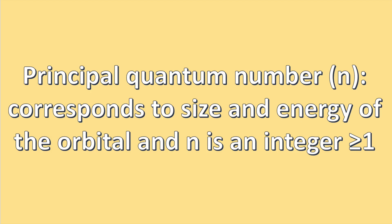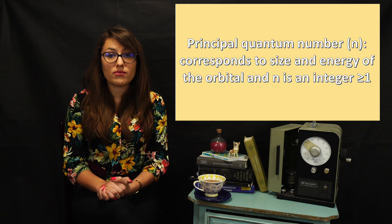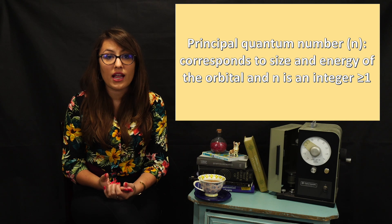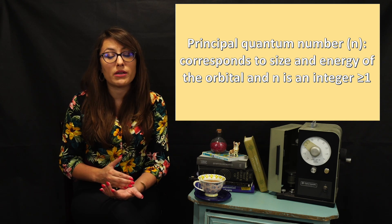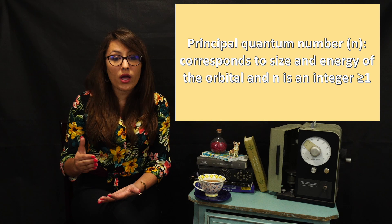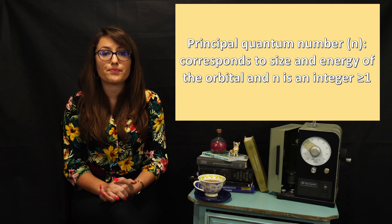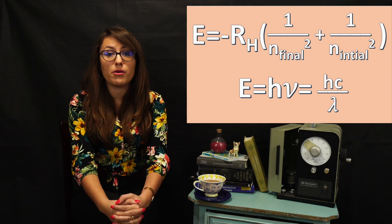The first quantum number, which is denoted by n, is also called the principal quantum number. The principal quantum number corresponds to the size and energy of the orbital and can be equal to any integer greater than or equal to 1. This quantum number is like the city, because it describes the energy level in which the electron is located — either closest to the nucleus at n = 1, or further away at n = 2, 3, etc. We have seen n before in an earlier lecture — this is the same n from the Bohr equation.